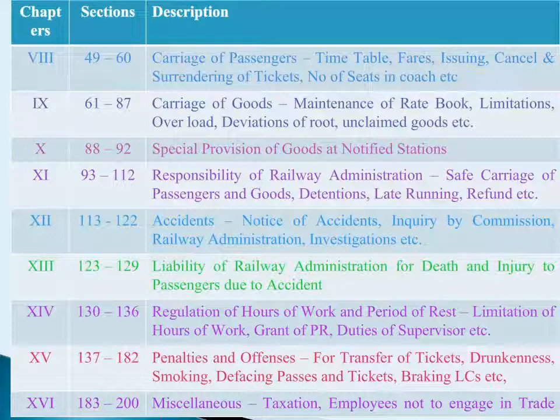Chapter 12: Accidents has nine sections, Sections 113 to 122. This covers inquiry by CRS, inquiry by railway administration, procedure for conducting enquiries, and enquiry into accidents not covered under Section 113, etc.